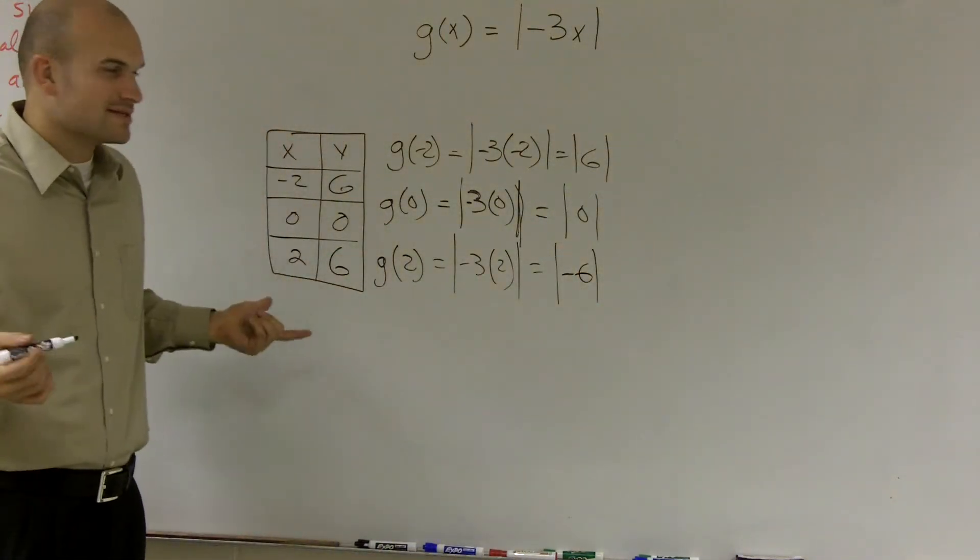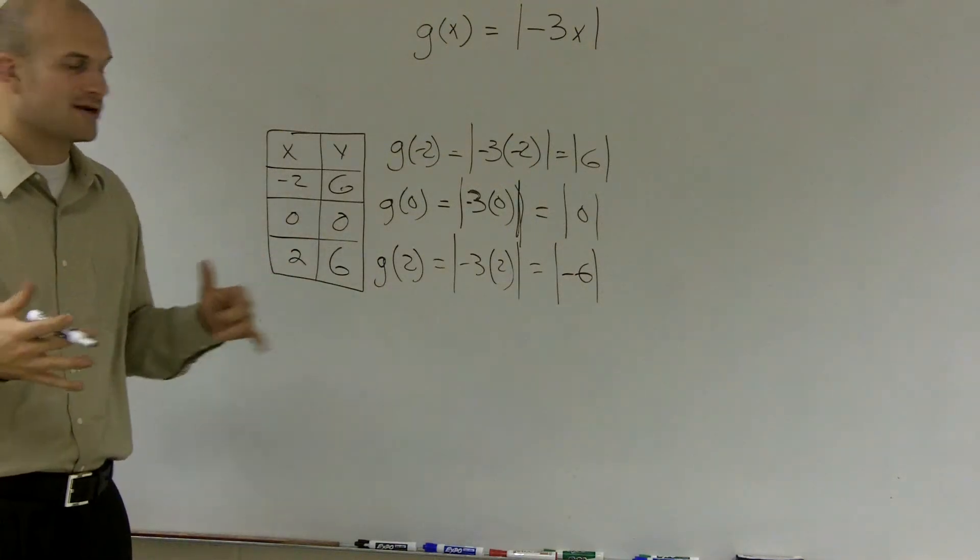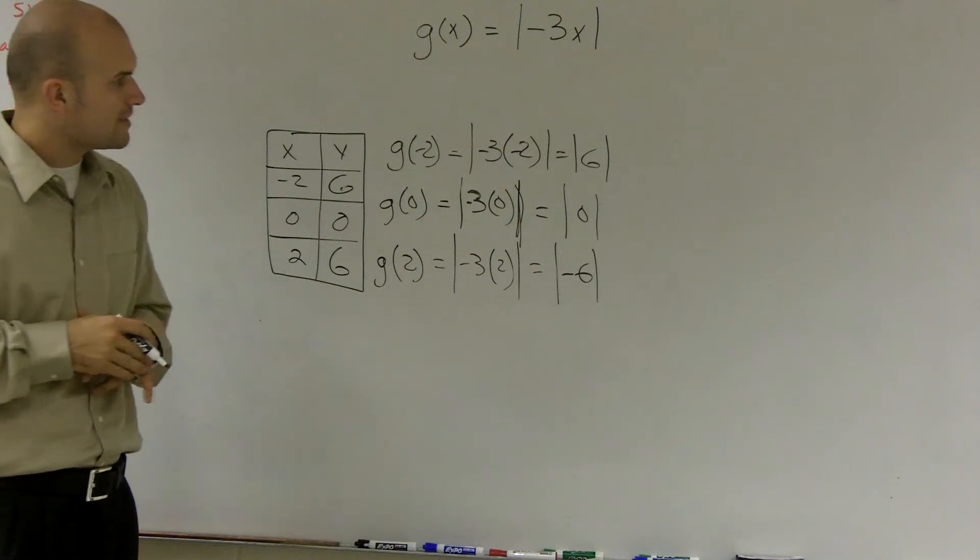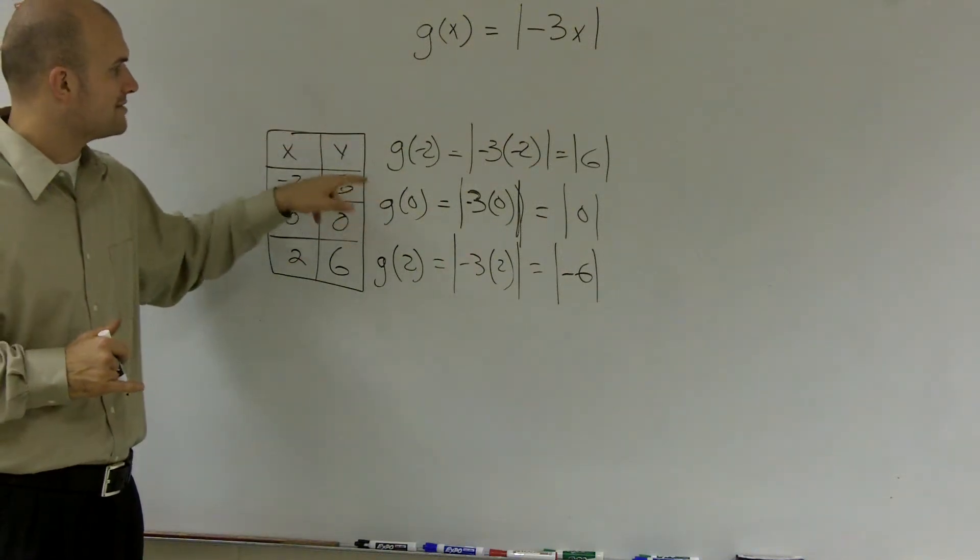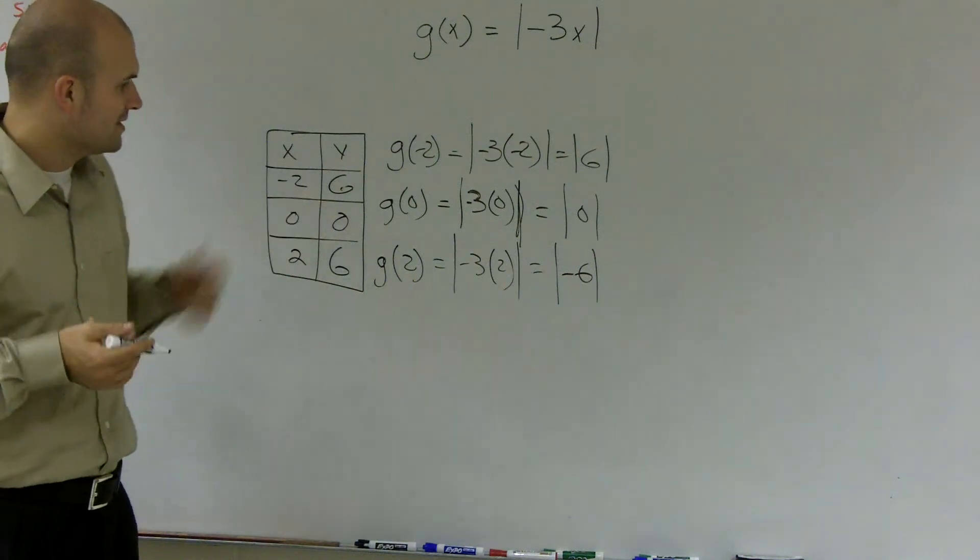So therefore, I have three points. You might have to use more depending on your problem, but I'm just giving you a basic overview of graphing. And with an absolute value, I know that my vertex, the bottom of my V, is at 0, 0.